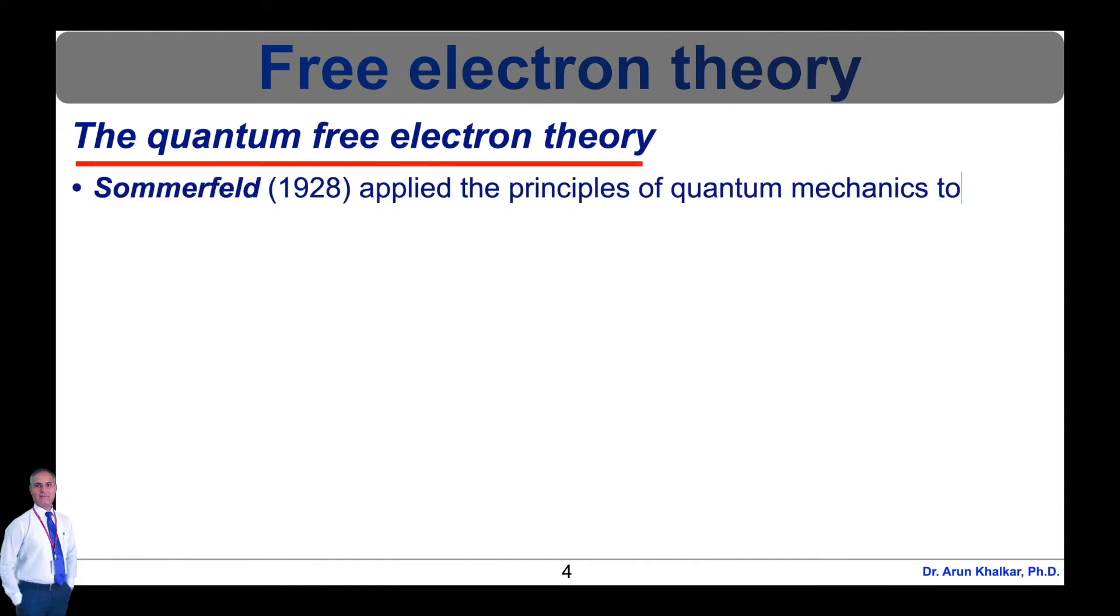Sommerfeld in 1928 applied the principles of quantum mechanics to classical free electron theory. According to classical theory, the free electrons in a metal have random motions with equal probability in all directions. But according to quantum theory, the free electrons occupy different energy levels up to Fermi level at 0 degrees Kelvin. They possess different energies and hence different velocities. The different velocities of these free electrons can be seen in velocity space.